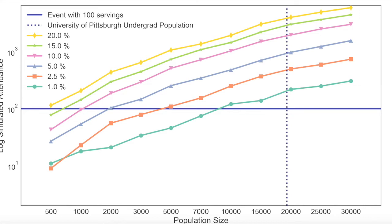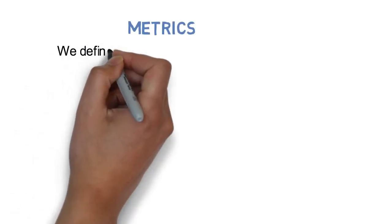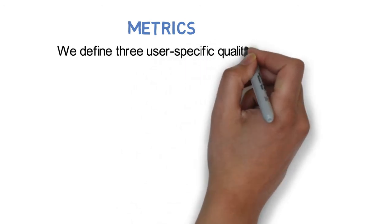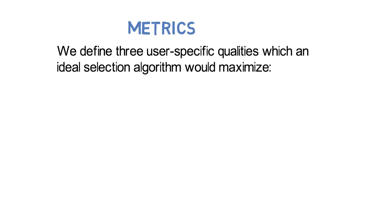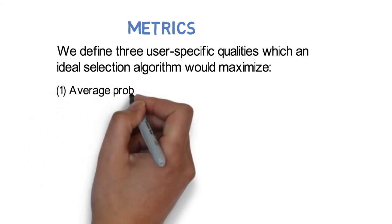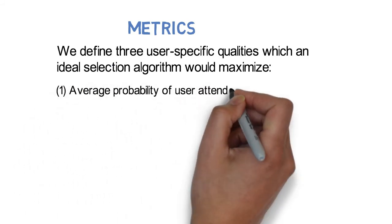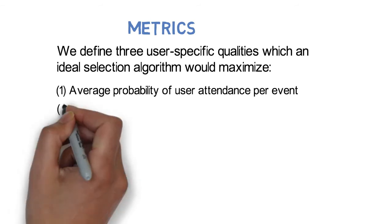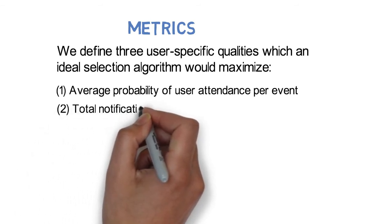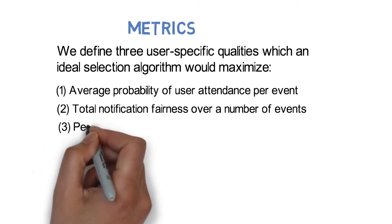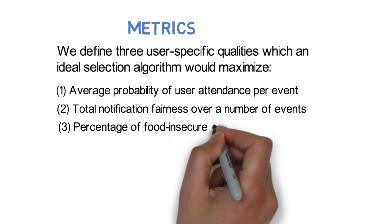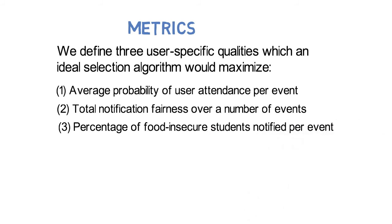So clearly we need a better algorithm to select whom to notify. We define three user-defined metrics which an ideal selection algorithm should have. First one is the average probability of user attendance per event. The second is the total notification fairness over a number of events. And the last one is the percentage of food insecure students that are notified per event.